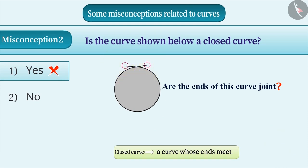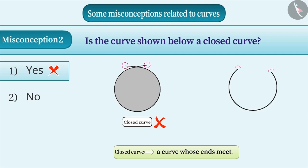You are right. Here, ends of curve are not joined. Therefore, it is not a closed curve. Curve whose ends are open is open curve. Therefore, the correct answer is option 2.